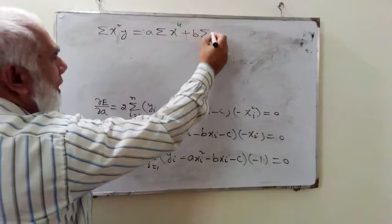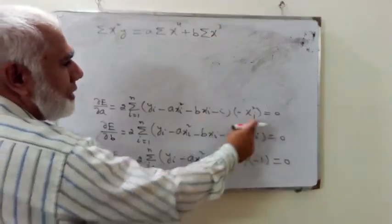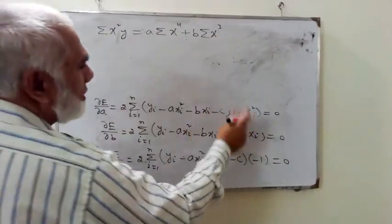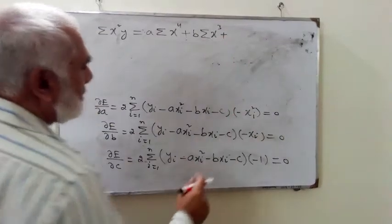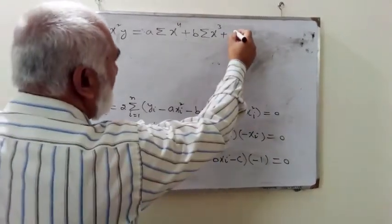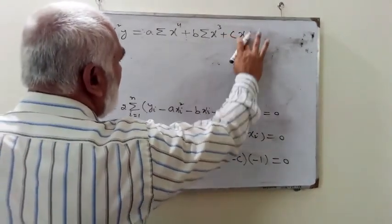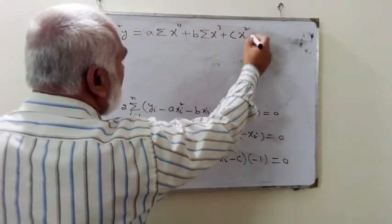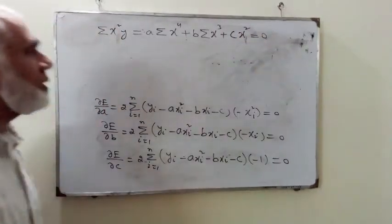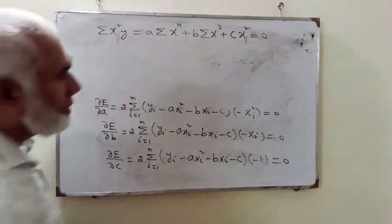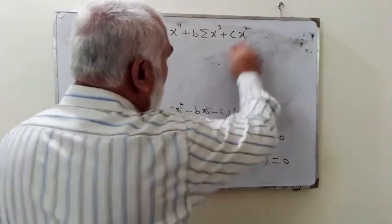At the same time I'm shooting it on the right side, so this quantity gives you plus b Σx³—x and x²—and from the third we get plus c times x², so this is the output after the simplification of equation number one.